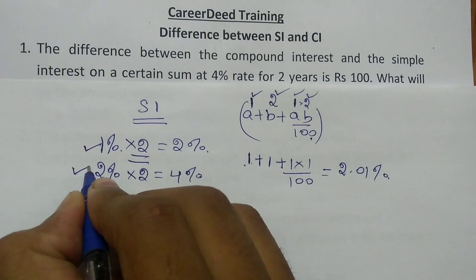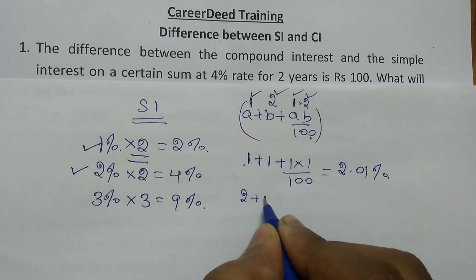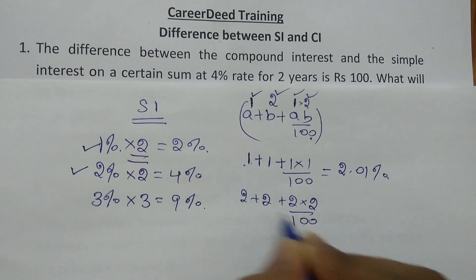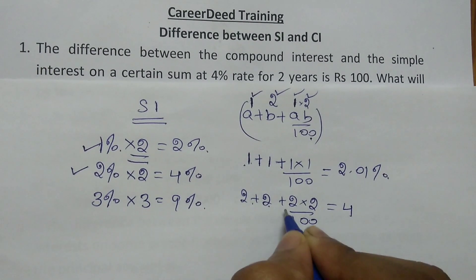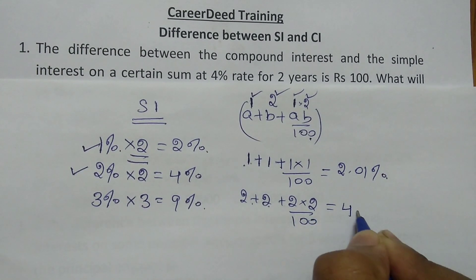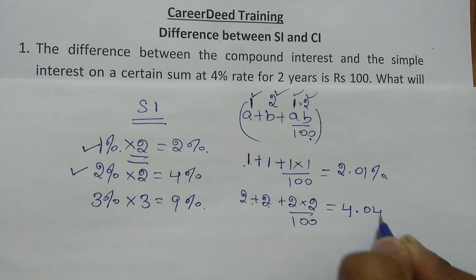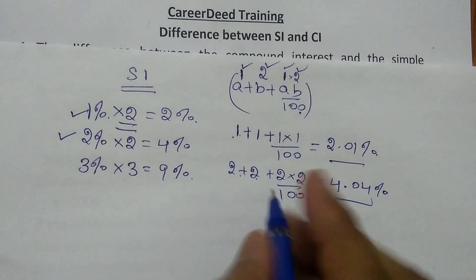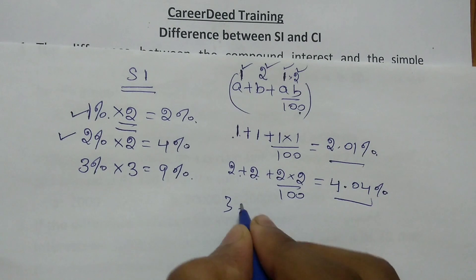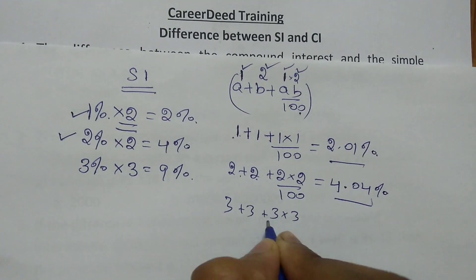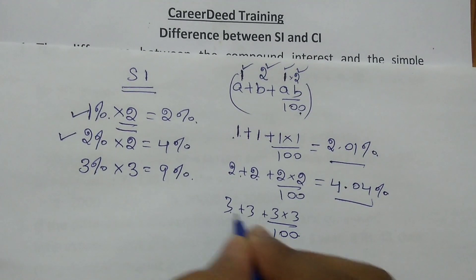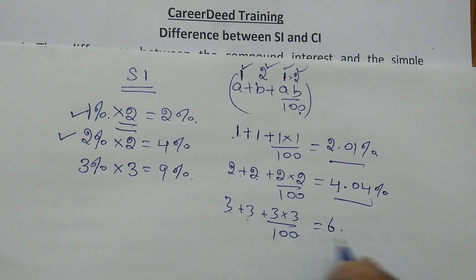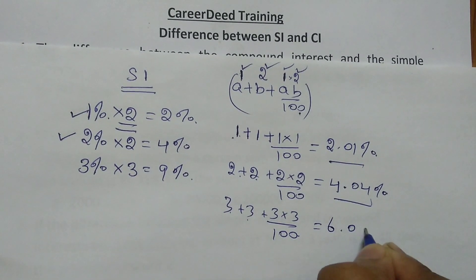If it is 2% per annum: 2 + 2 + (2 × 2)/100. So 2 + 2 = 4, plus 0.04, giving 4.04%. If it is 3% per annum: 3 + 3 + (3 × 3)/100. So 3 + 3 = 6, plus 0.09, giving 6.09%.